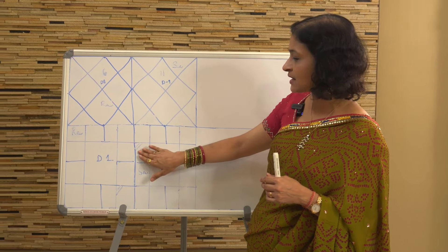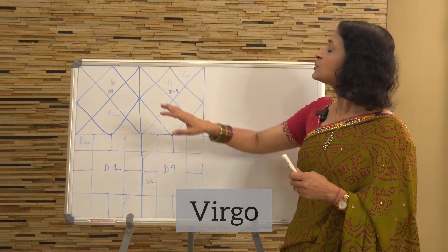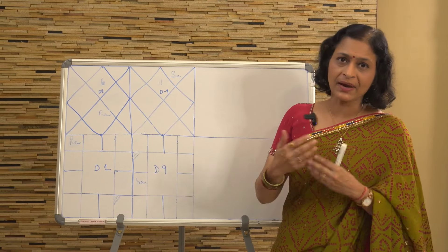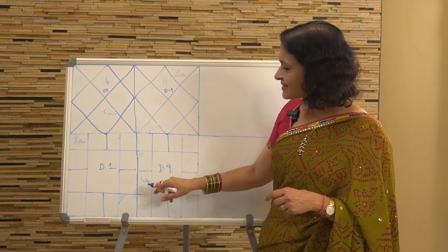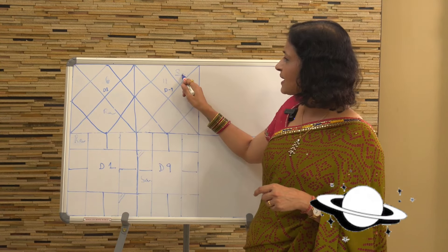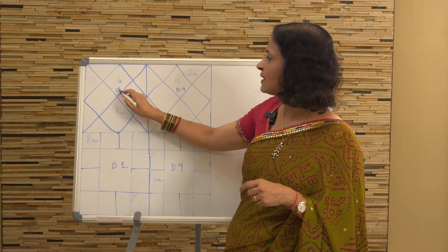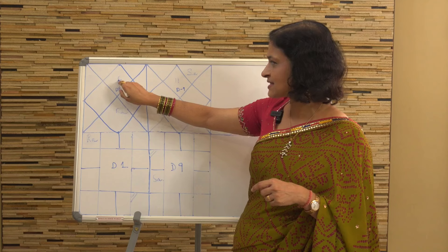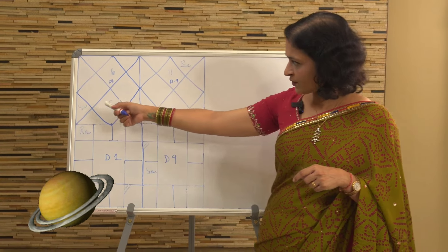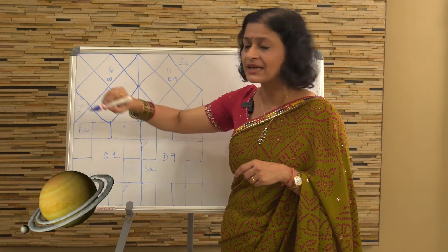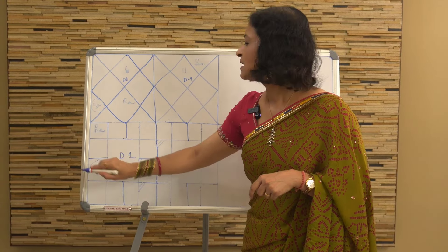The D9 lagna is Aquarius and the D1 lagna is Virgo. Applying the principle: we take the transit in the seventh house in the D1, take Saturn from the D9 placed in Capricorn, and superimpose it in the D1. Capricorn falls in the fifth house of the D1 chart for this Virgo lagna person. So Saturn is placed in the fifth house.